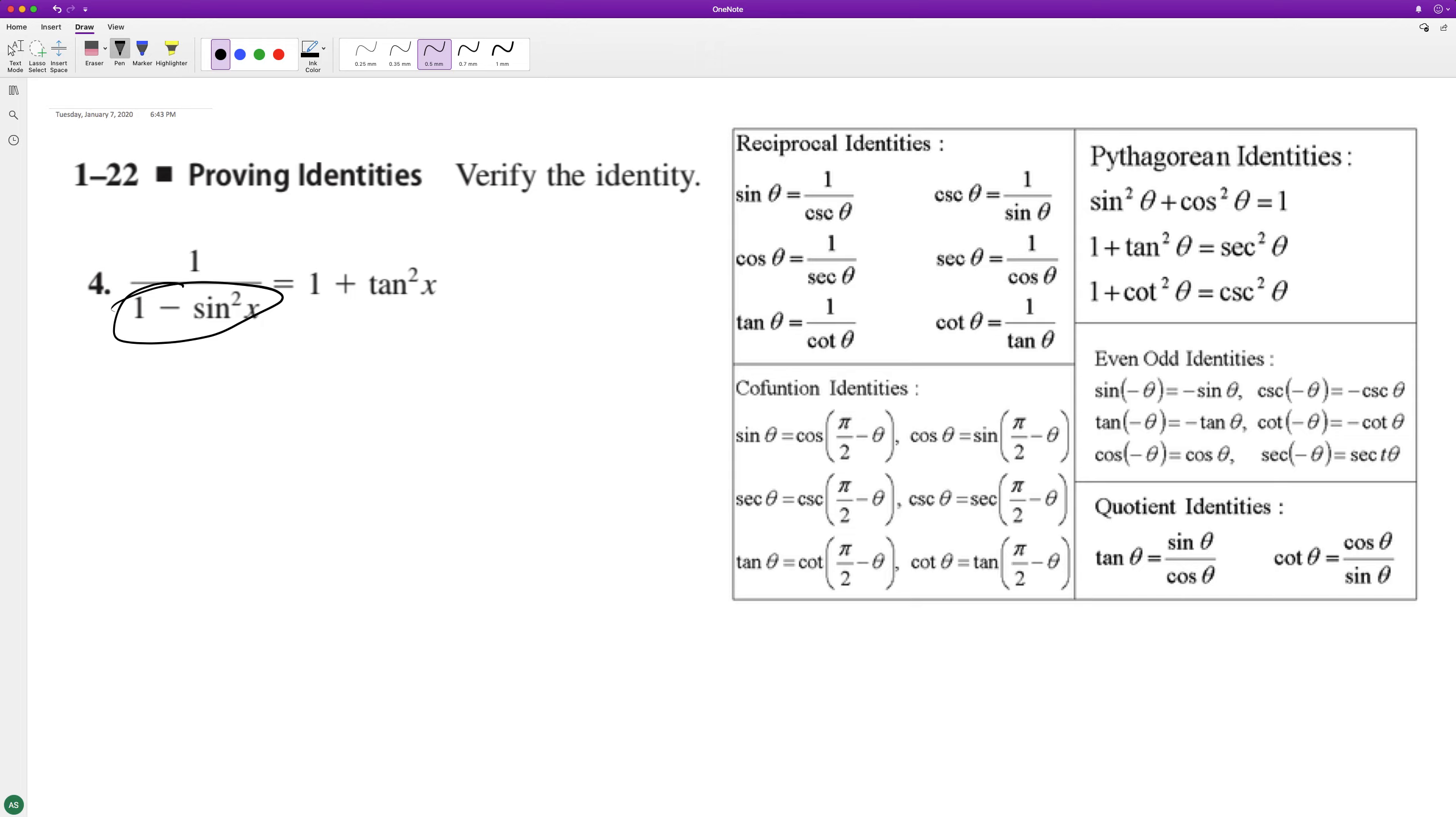And if you look here, our first one, if we have one minus sine squared theta, it's the same thing as cosine.